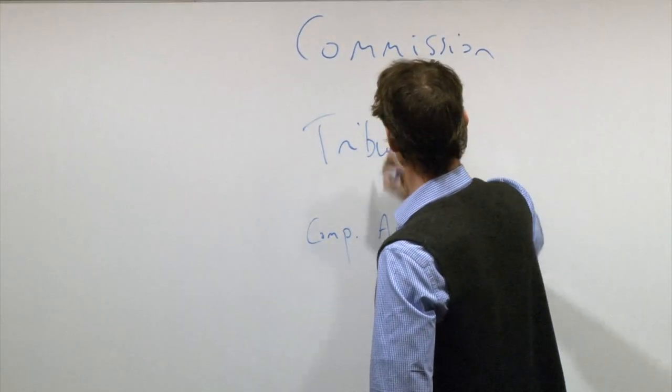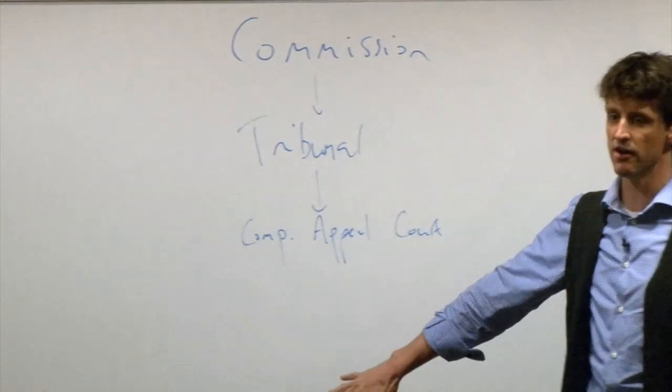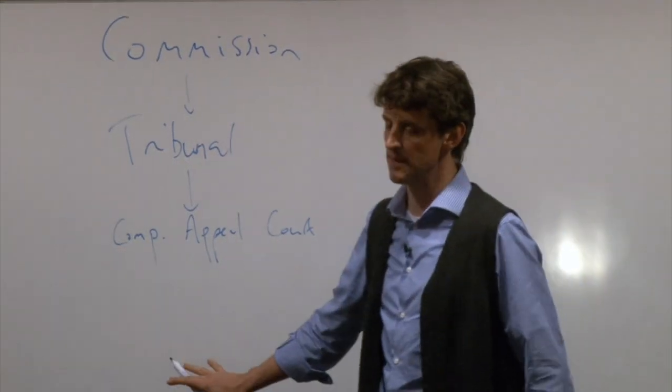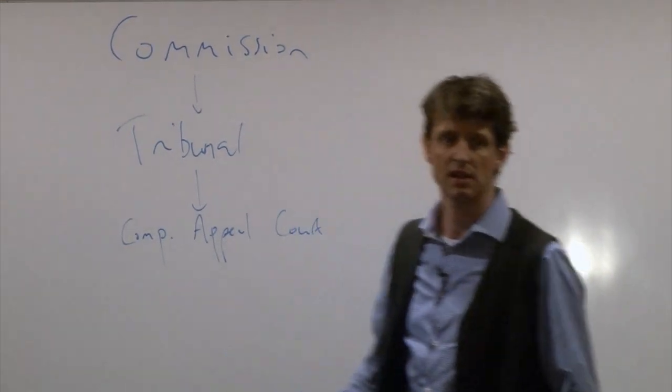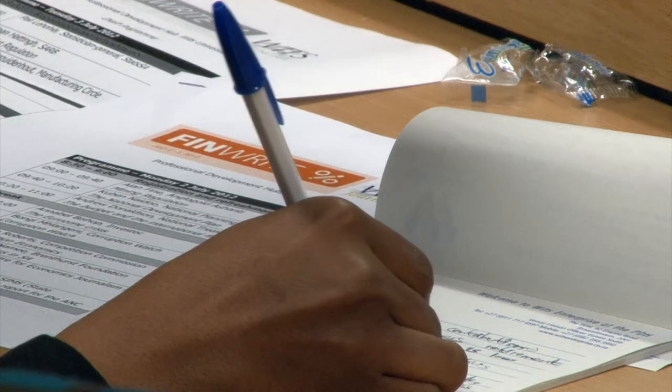That's the kind of process they go through, and you can appeal higher up all the way to constitutional court. In terms of what we do, there's really three main areas of the Competition Act. We look at mergers, we look at horizontal restrictive practices which are cartels, and we look at unilateral conduct.